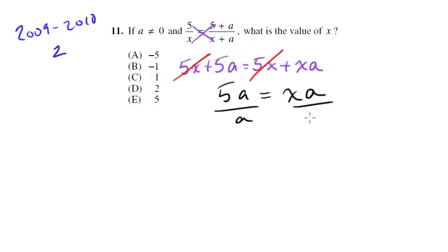If you don't believe me, divide both sides by a. The a's will cancel. We get x is 5. So what is the value of x? It's 5, choice E.